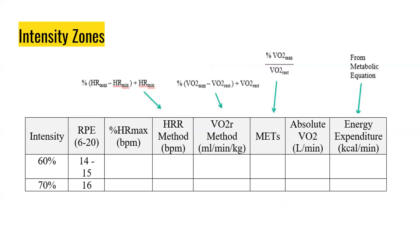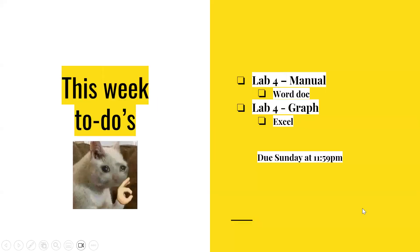For one of the tables in your lab manual, use the formulas at the top to calculate 60% and 70% intensity using the different methods. That's it — thank you, 405. Happy studying.